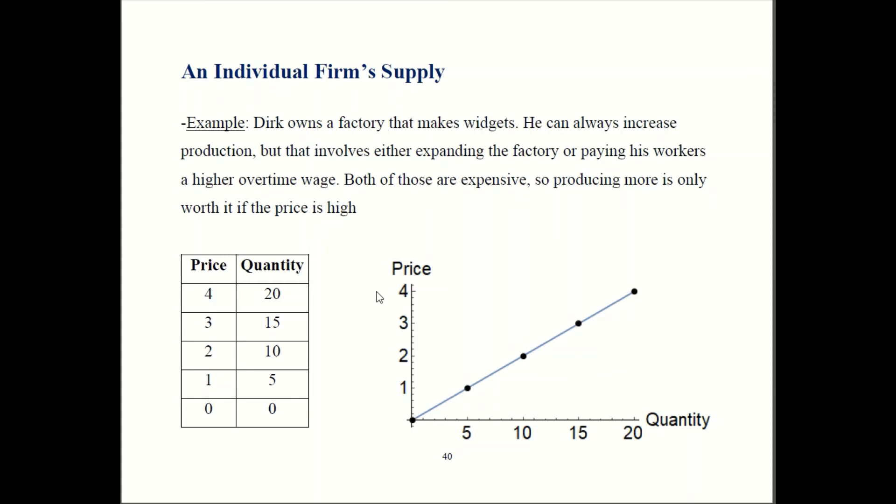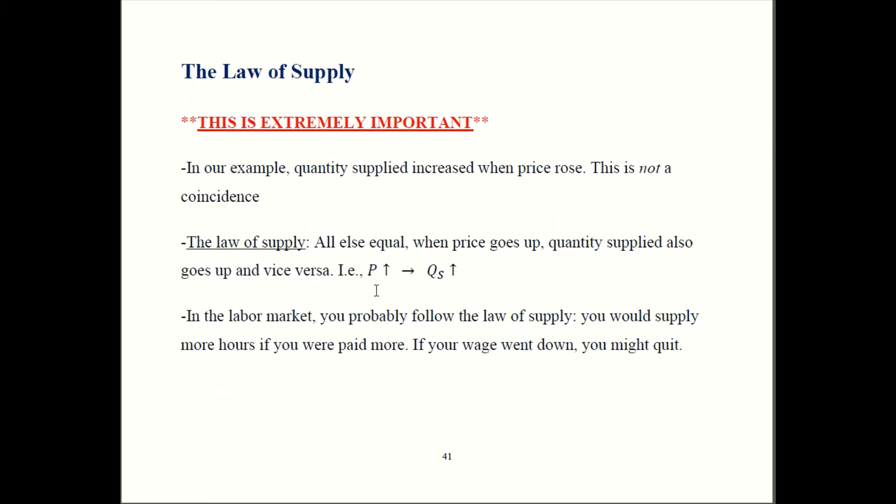So in general, Dirk will produce more when the price is higher. And that's true not just for Dirk and not just for his widget factory. That's actually true in general. This is called the law of supply. And this is a very big deal in this class and in economics in general. All else equal, when price goes up, quantity supplied should increase. Similarly, if price goes down, quantity supplied should decrease. All else equal. So in our notation, we use P for price. If P goes up, QS is quantity supplied, that should also go up.